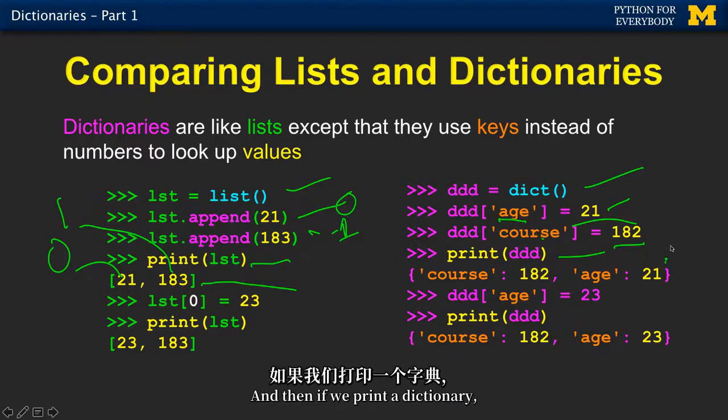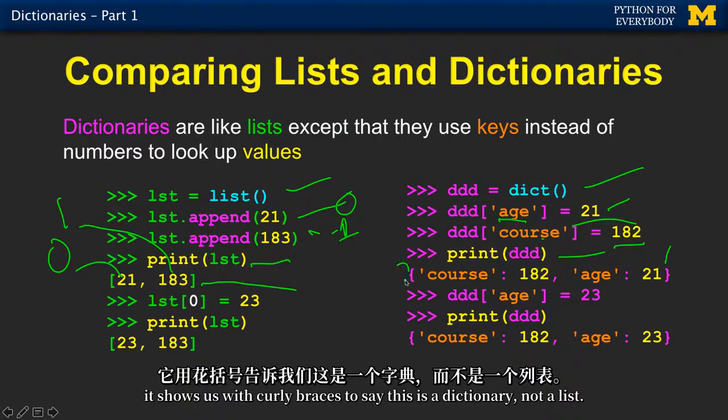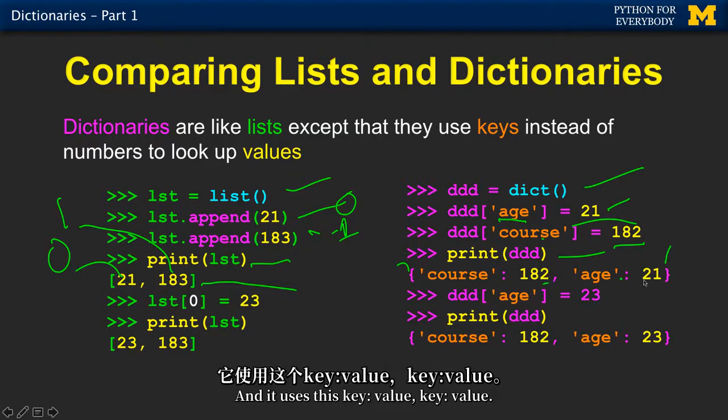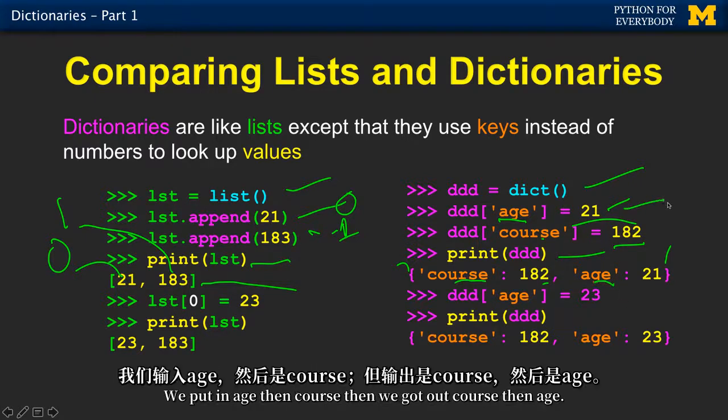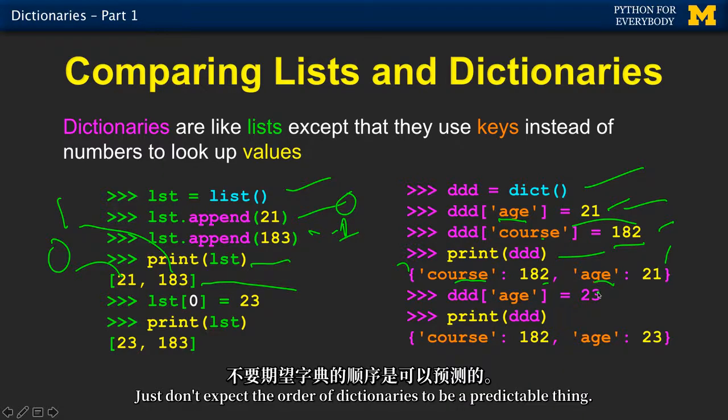And then if we print a dictionary, it shows us with curly braces to say, this is a dictionary, not a list. And it uses this key colon value, key colon value. And order, again, isn't the same. We put in age, then course, and we got out course, then age. Just don't expect the order of dictionaries to be a predictable thing.